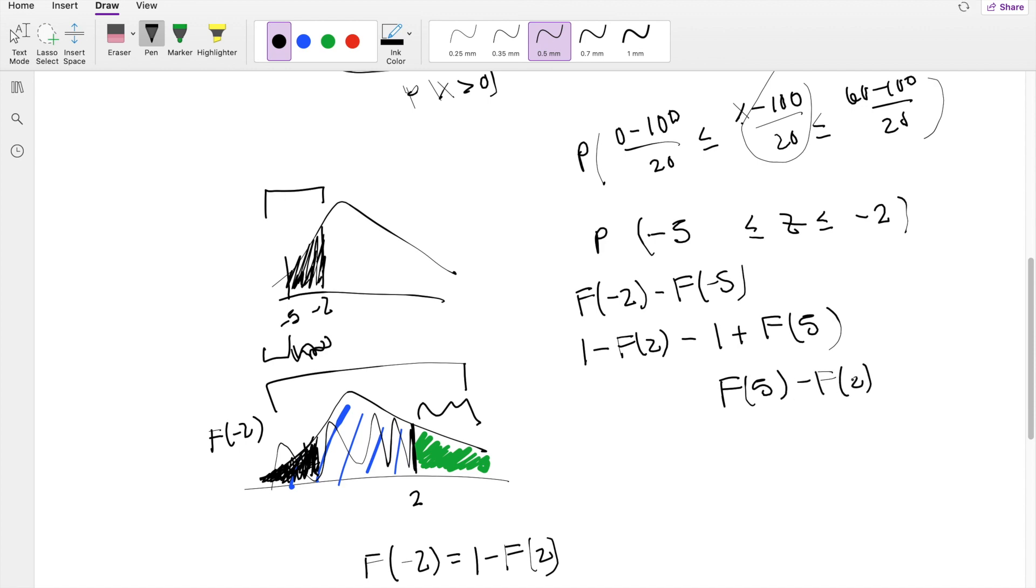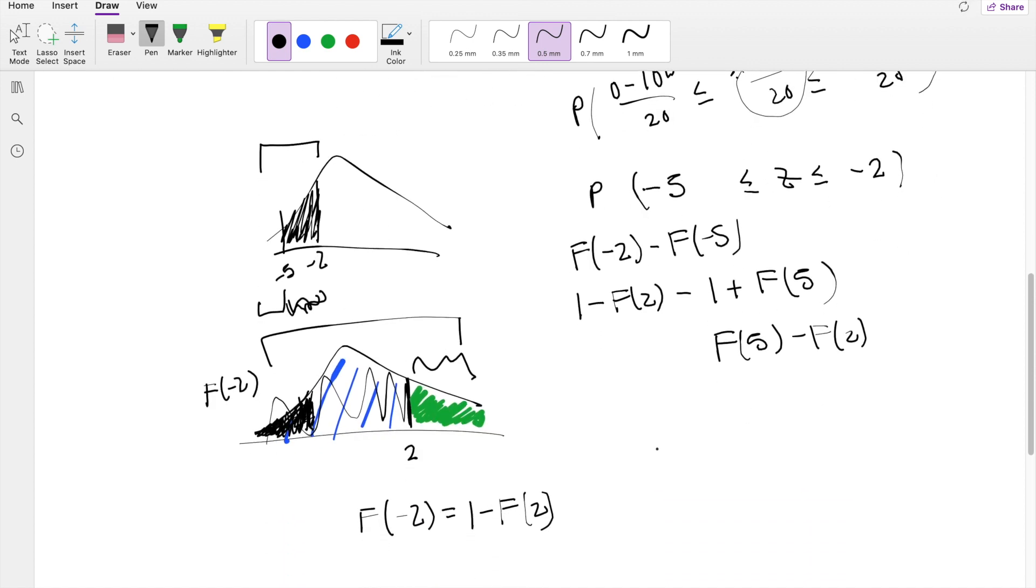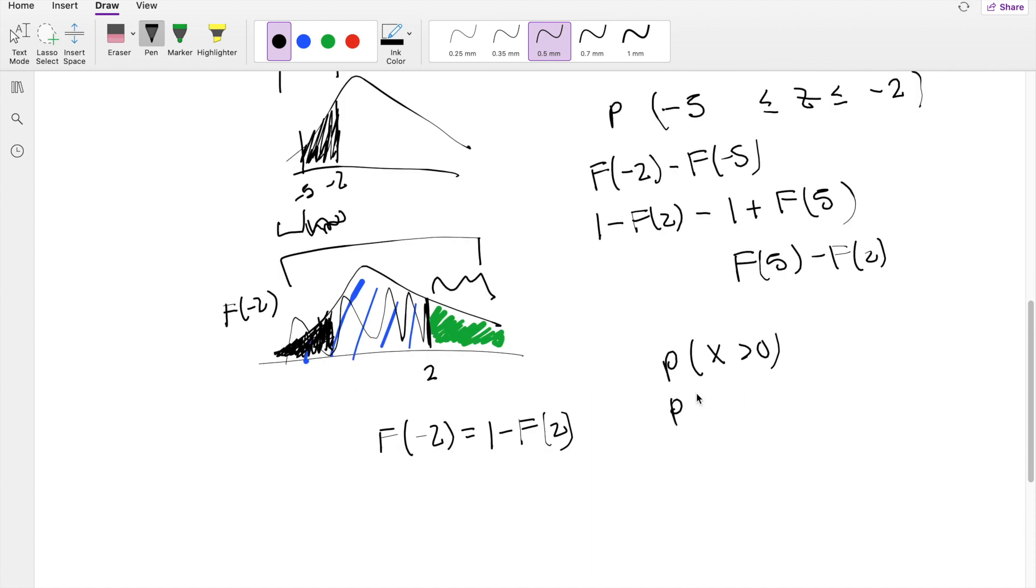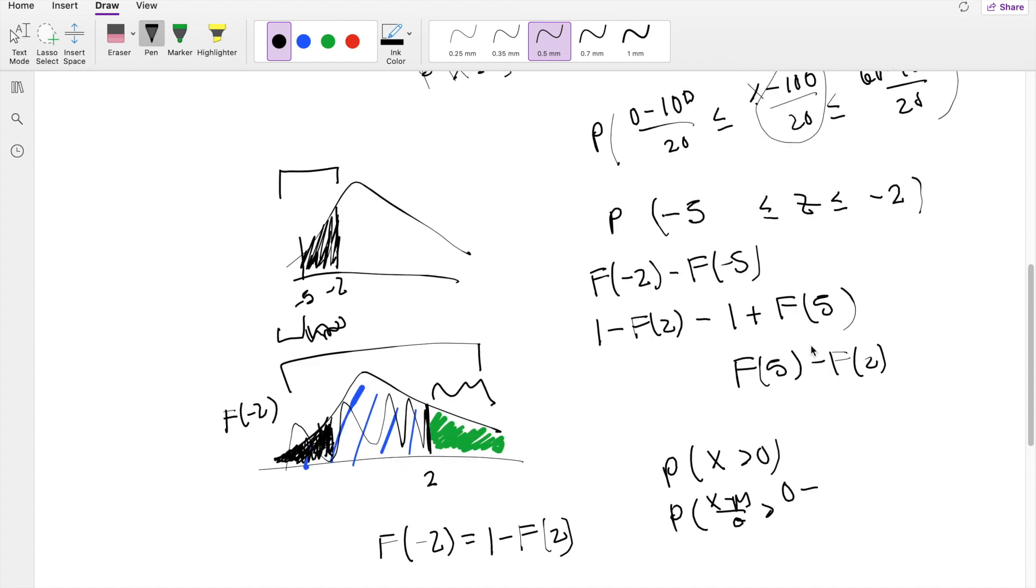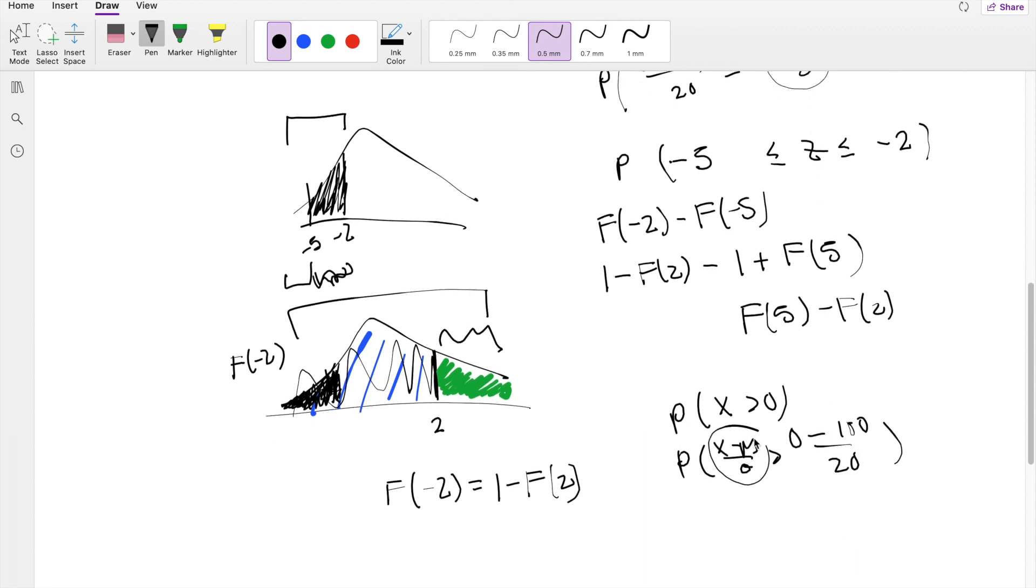But we can't stop here, we also have the denominator. The denominator is quite simple. What is the probability that X is greater than 0? We can normalize it out. Probability of X minus mean over standard deviation is greater than 0 minus mean, which we know is 100, divided by 20 here. So this right here is the definition of Z. Probability that Z is greater than negative 5 here.